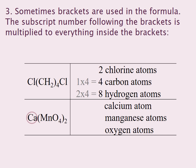Ca: there is 1 calcium, and I know the C goes with the a because the a is lowercase, so it belongs to the C that preceded it. There is only 1 of them, so I have 1 calcium atom. I also have 1 manganese. It is inside brackets, so I will have to multiply it by 2, giving me a total of 2 manganese atoms. I have 4 oxygens, also inside brackets, so I will have to multiply that by 2, giving me a total of 8 oxygen atoms.